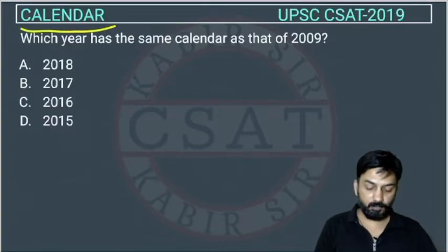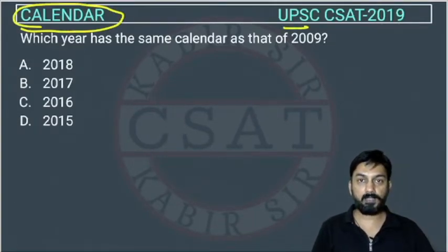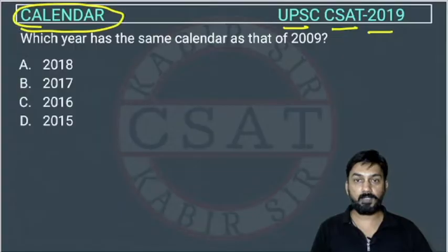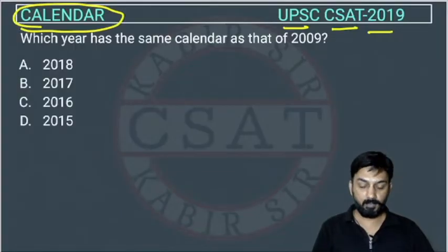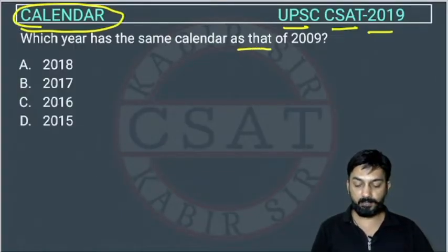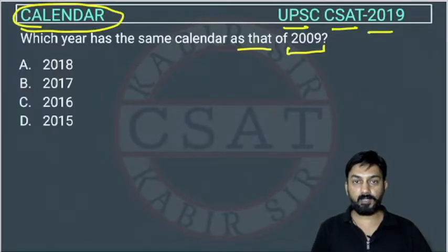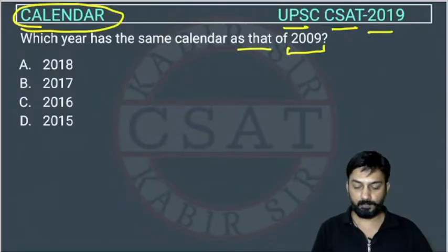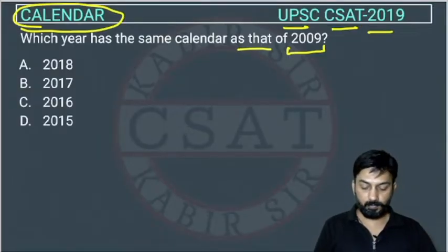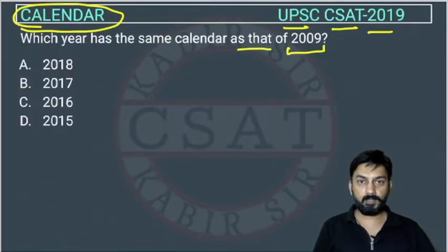This is a question from the calendar chapter asked by UPSC in the CSAT paper of 2019. Which year has the same calendar as that of 2009? This is a conceptual question.